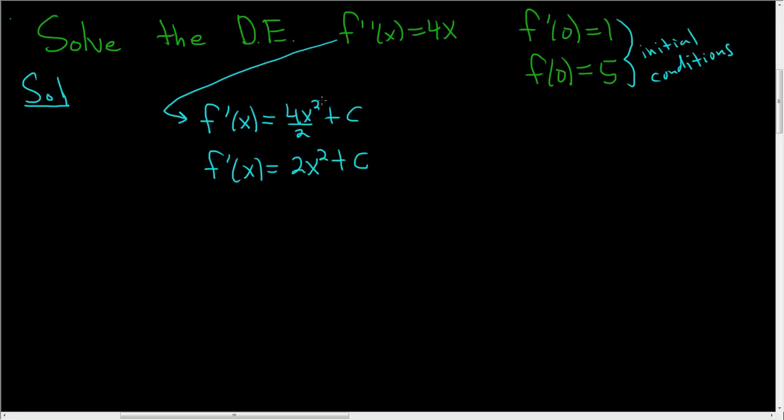So step one, integrate. And now use this initial condition to find c. This says replace x with 0 and set everything equal to 1. So f prime evaluated at 0 is 2 times 0 plus c and that's equal to 1. So c is equal to 1.